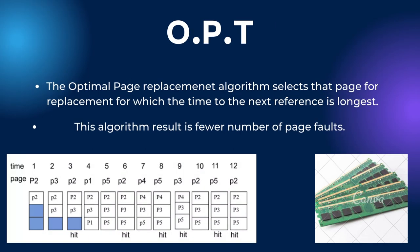The next is the optimal page replacement algorithm. It is the most desirable page replacement algorithm. This algorithm replaces the page whose demand in the future is least compared to other pages in frames. Whenever a new page is referred and not present in memory, a page fault occurs and the OS replaces one of the existing pages. The target for all algorithms is to reduce the number of page faults. In this algorithm, the OS replaces the page that will not be used for the longest period of time in the future.